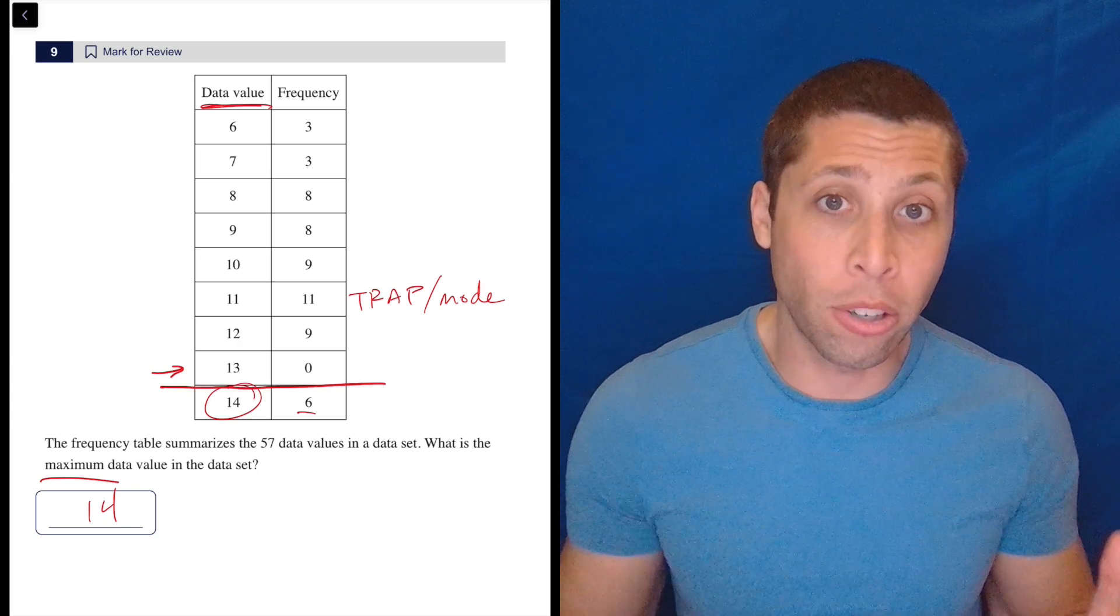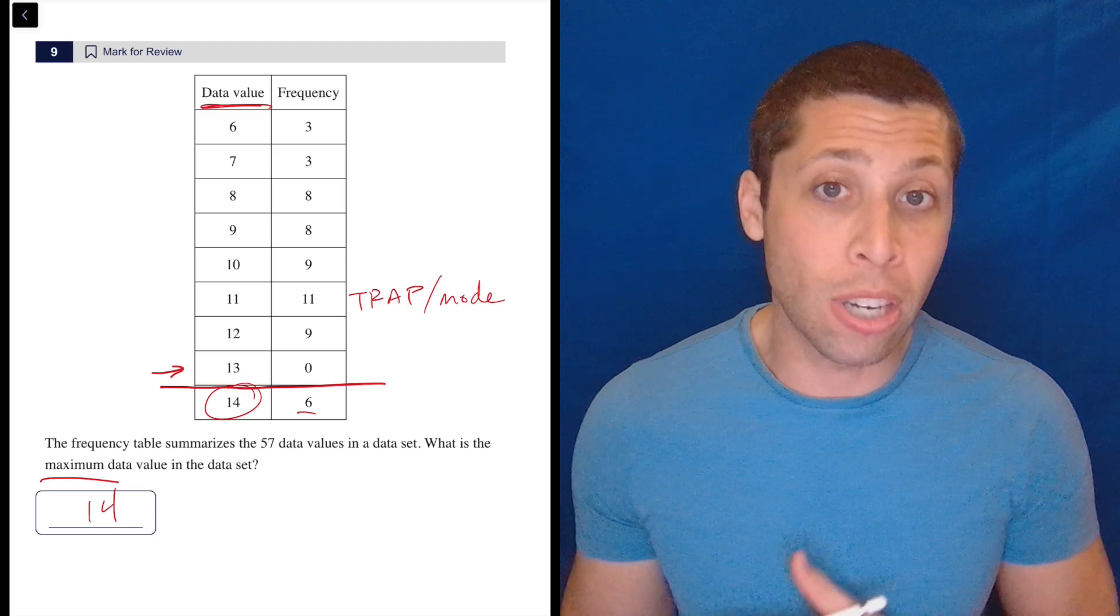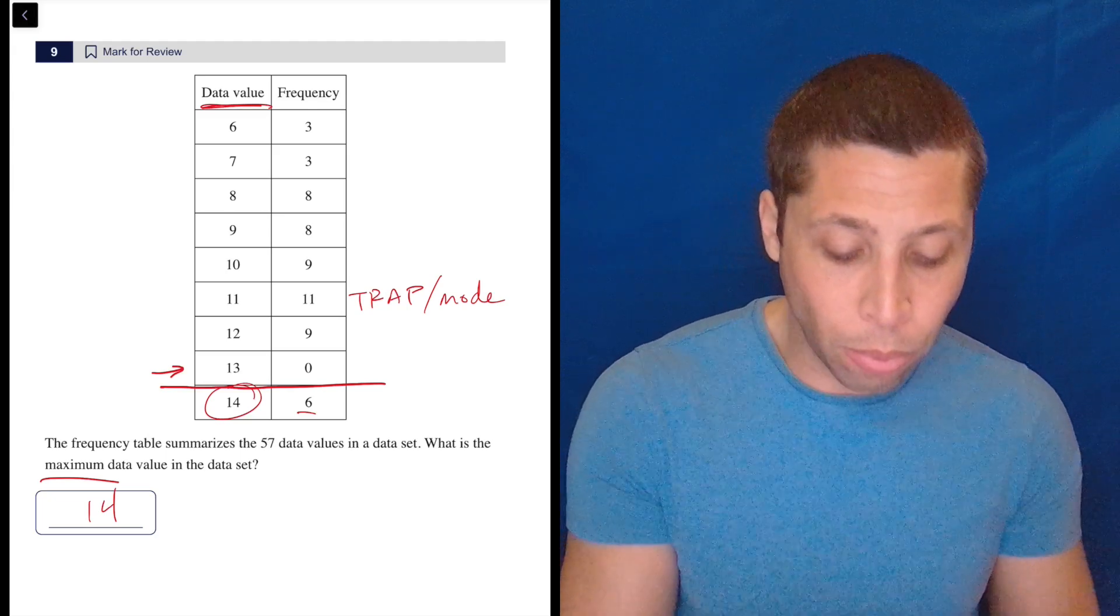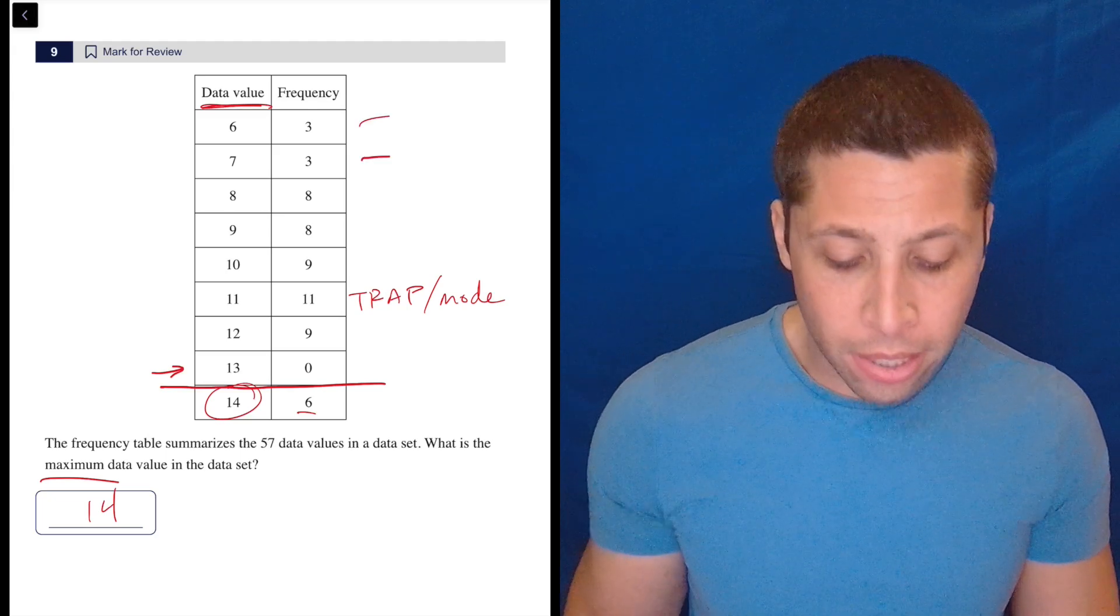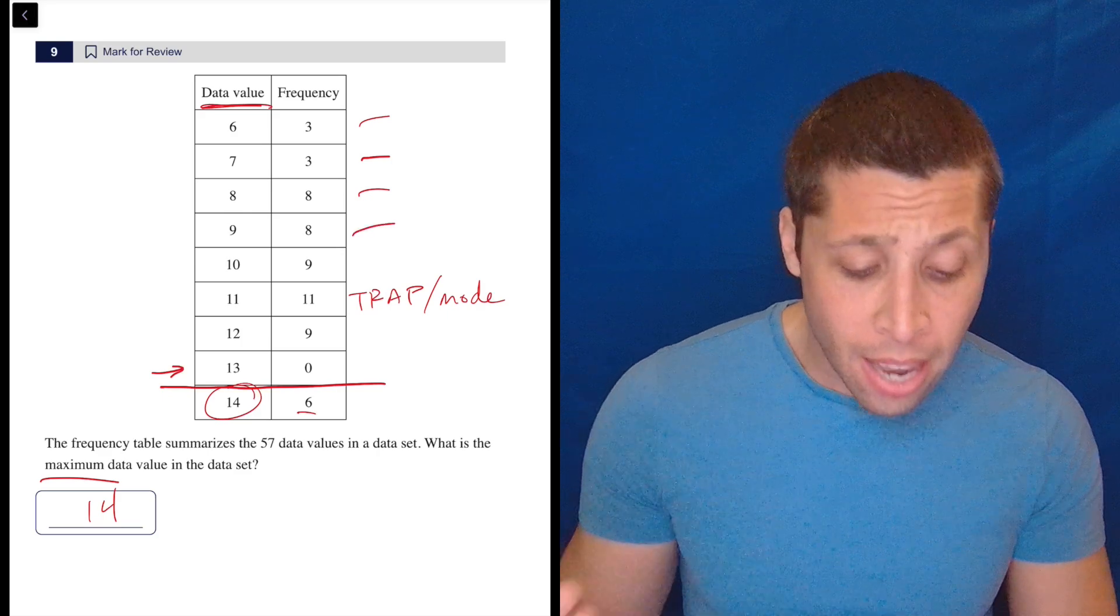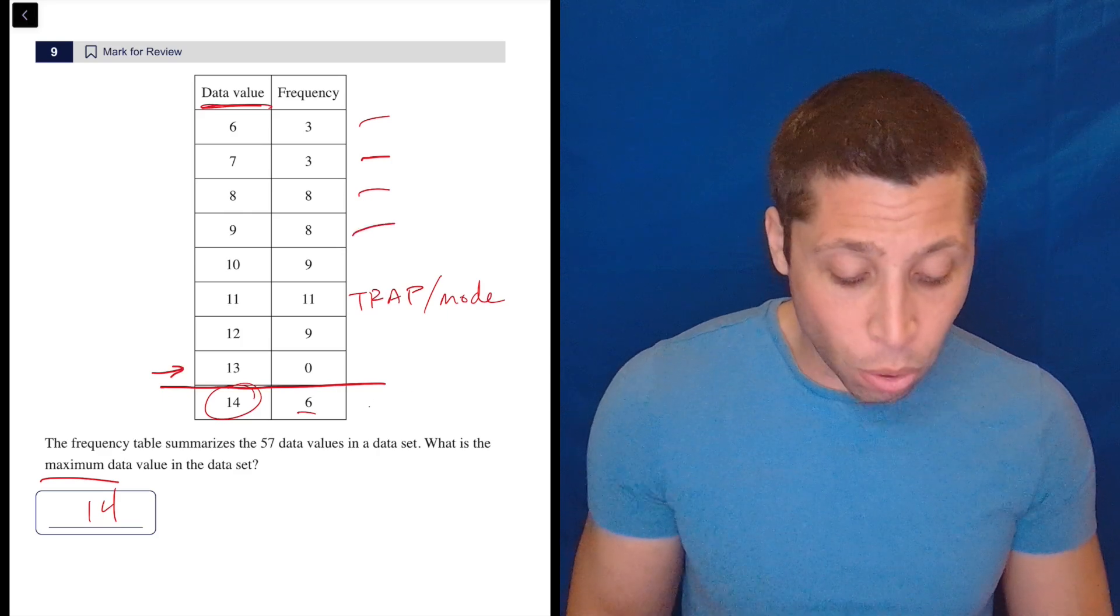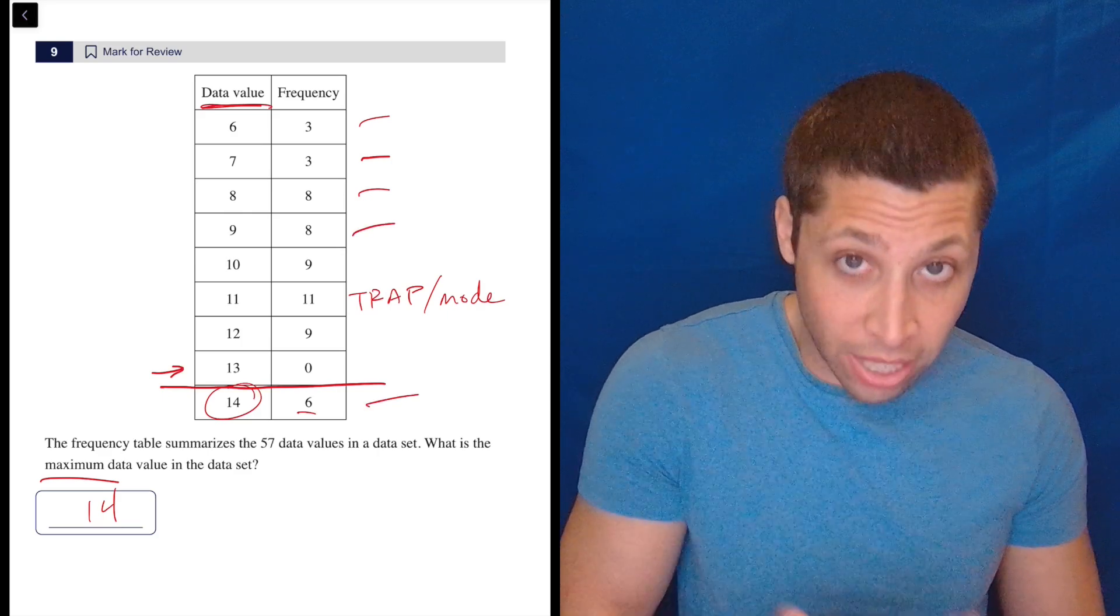And that's what this chart is doing, it's telling us how often each number appears, right? So there are three sixes, three sevens, eight eights, eight nines, right? And so there are six 14s.